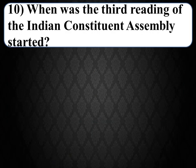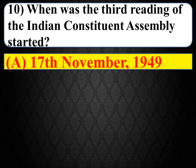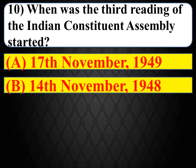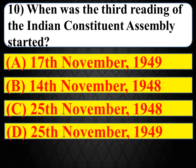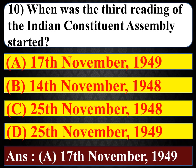Next question: when was the third reading of the Indian Constituent Assembly started? Options: 17th November 1949, 14th November 1948, 25th November 1948, 25th November 1949. The right answer is A — 17th November 1949.